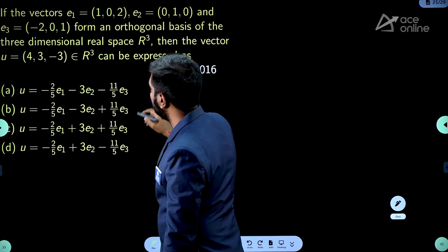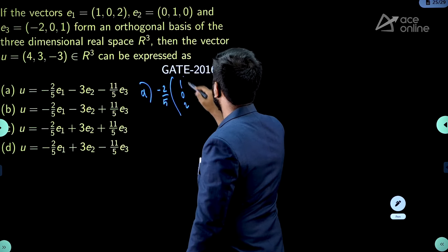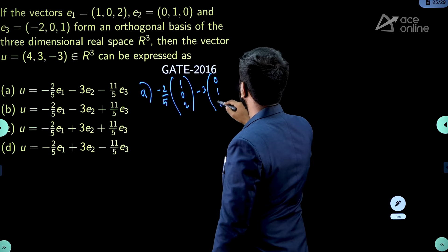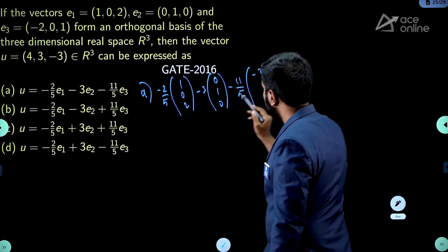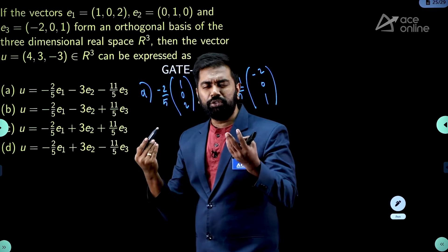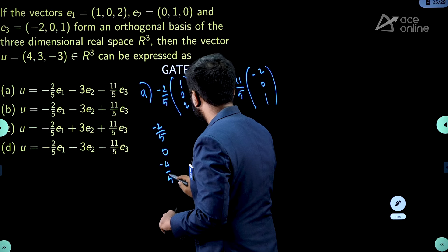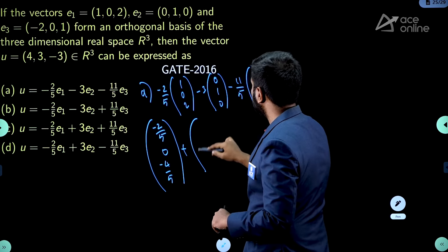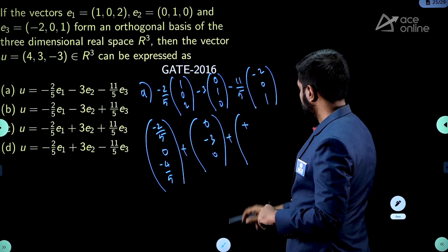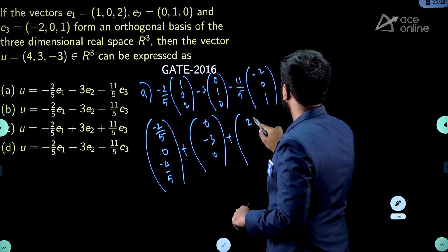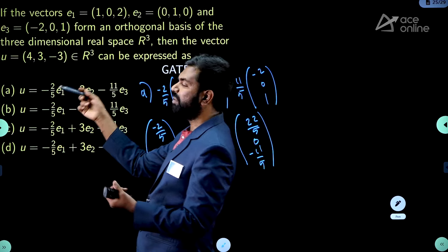I will verify each option. Option A says u = (−2/5)·e₁ + (−3)·e₂ + (−11/5)·e₃, where e₁=(1,0,2), e₂=(0,1,0), e₃=(−2,0,1). Computing: (−2/5, 0, −4/5) + (0, −3, 0) + (22/5, 0, −11/5). Adding the first components: −2/5 + 22/5 = 20/5 = 4 ✓. Second: 0 + (−3) + 0 = −3, but I need 3. Option A is eliminated.